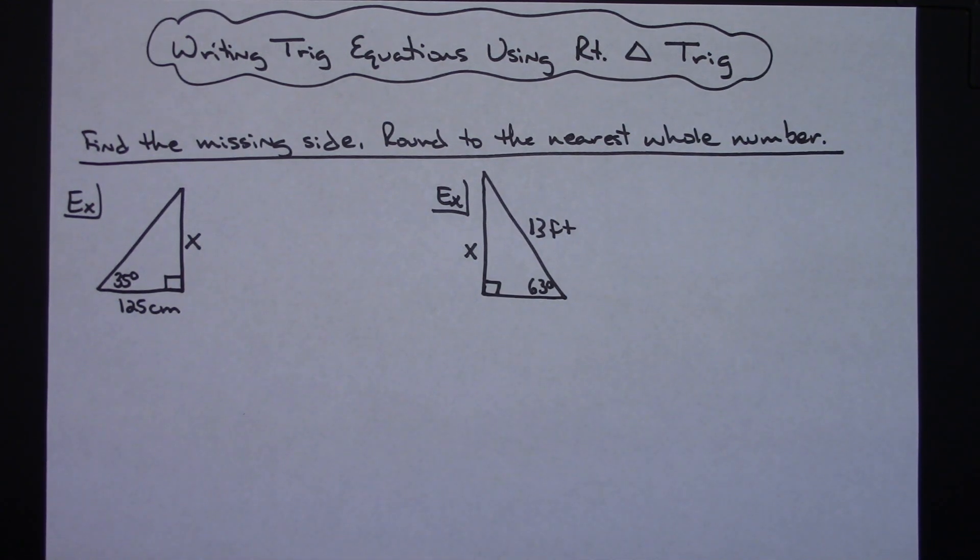In this video I'm going to do two examples that show you how to write out a trig equation using right triangle trig. You're given a right triangle and you're trying to find one of the missing sides.